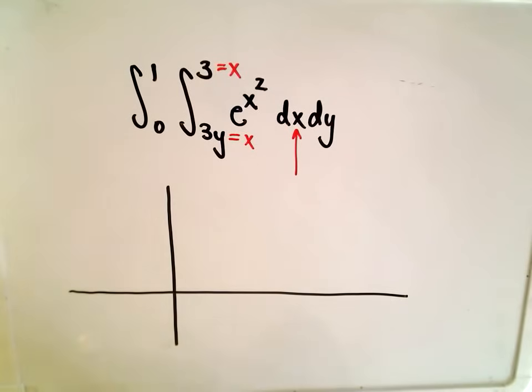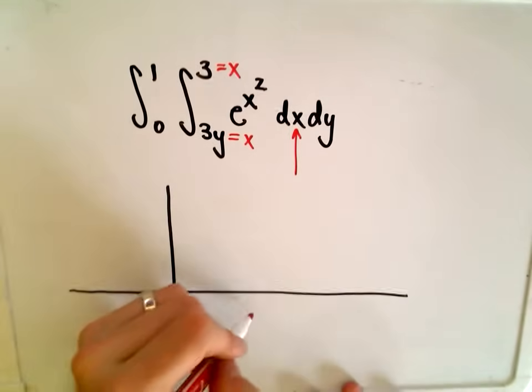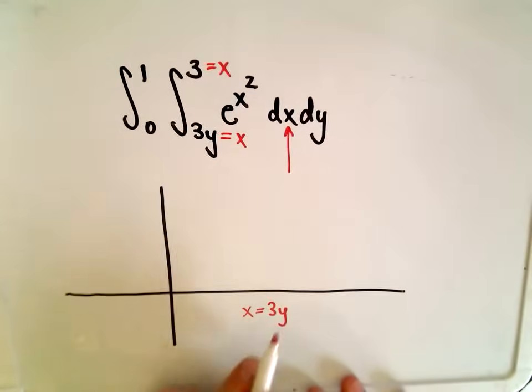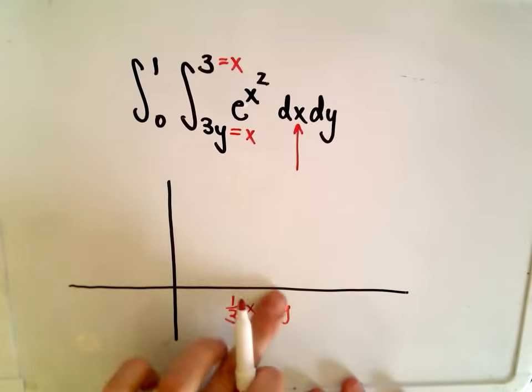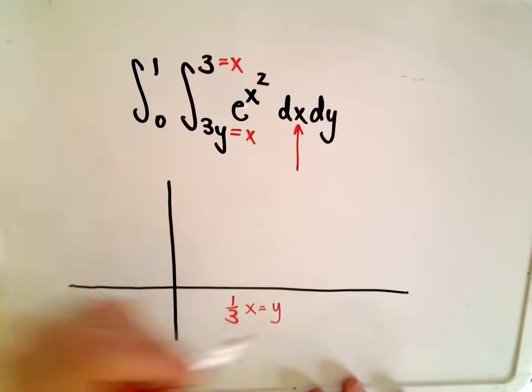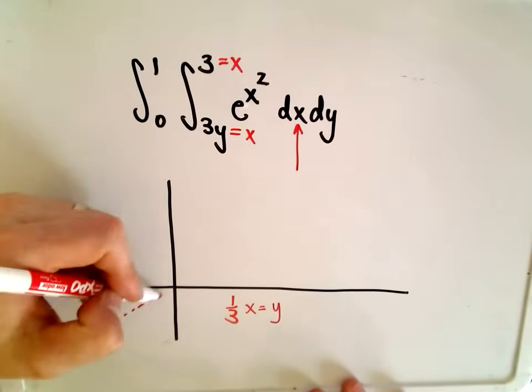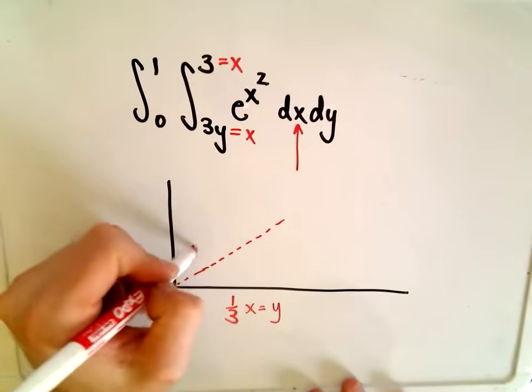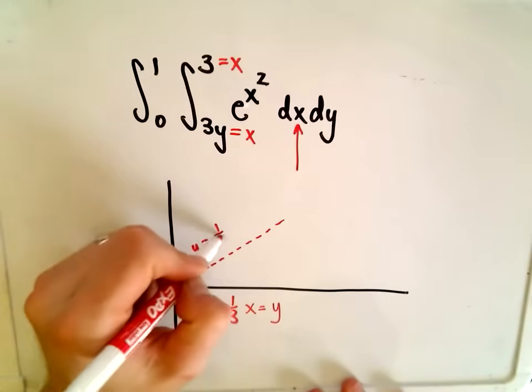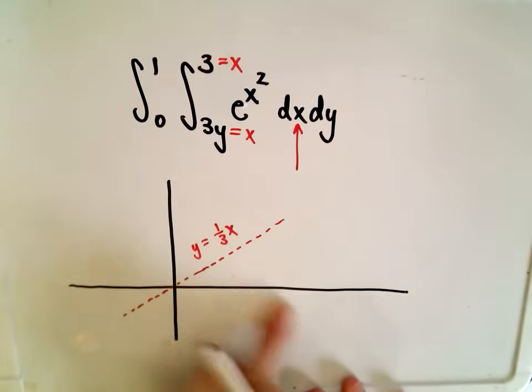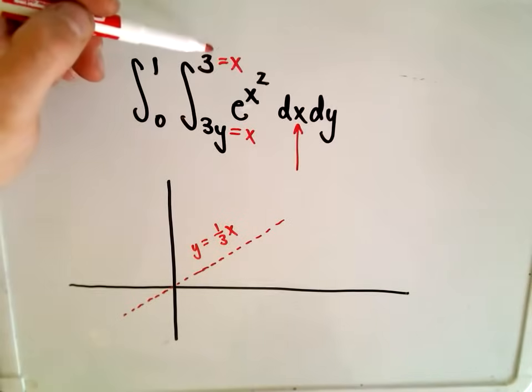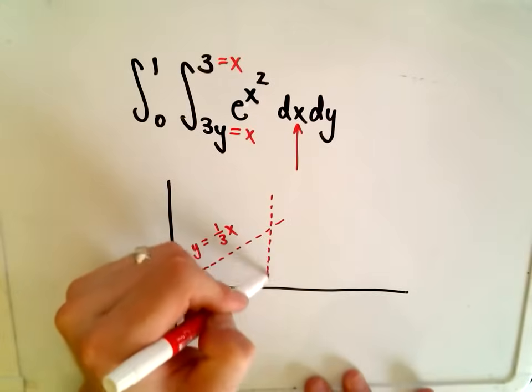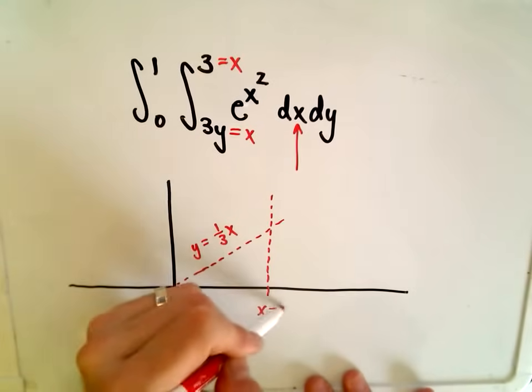So if you think about x equals 3y, well, we could certainly multiply both sides by one-third and have one-third x equals y. So we're just going to have a line that goes through the origin of slope one-third. I like to label as I go, y equals one-third x. And then it says the other line that I have to graph is the line x equals 3, so that's just a vertical line.